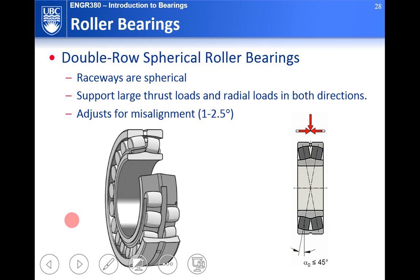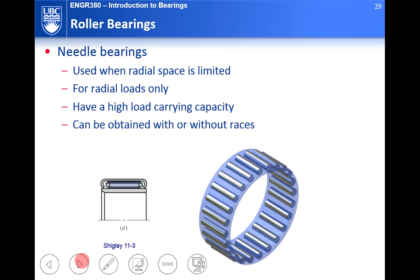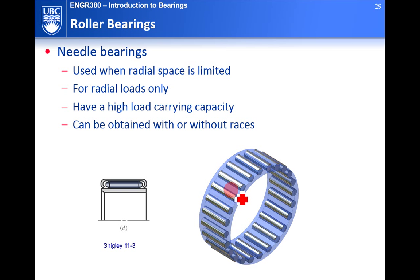The needle bearing has a very slim roller but can carry very high radial loads. You would typically choose a needle bearing due to space constraints — if you don't have much radial space but need to carry a significant radial load, a needle bearing is a good option.